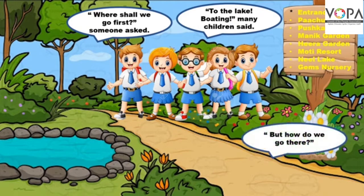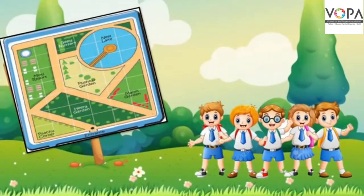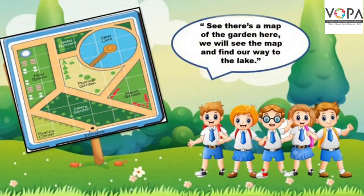'But how do we go there?' — लेकिन हम वहाँ कैसे जाएंगे? 'See the map of the garden here' — देखो बाग का नक्शा यहाँ है। We will see the map and find our way to the lake — बच्चों ने कहा कि नक्शे में हम देखेंगे कि जील की तरफ कौन सा रास्ता जाता है।